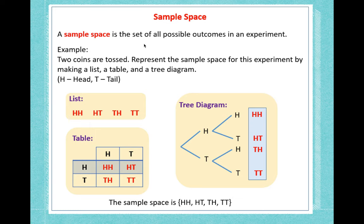A sample space is the set of all possible outcomes in an experiment. For example, if we have two coins and we toss them, we can show the sample space in three different ways. We can list them: two heads, heads and tails, tails and heads, and two tails. We can put it in a table, and we can do a tree diagram, which we will look at next lesson.